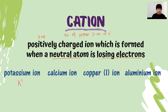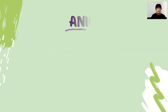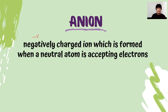First, potassium ion — a group 1 metal — K positive. I have calcium ion, Ca 2+. I have copper(I) ion, which represents Cu positive; but if the question says copper(II) ion, then it will be Cu 2+. I also have aluminium — group 13 — so Al 3+.